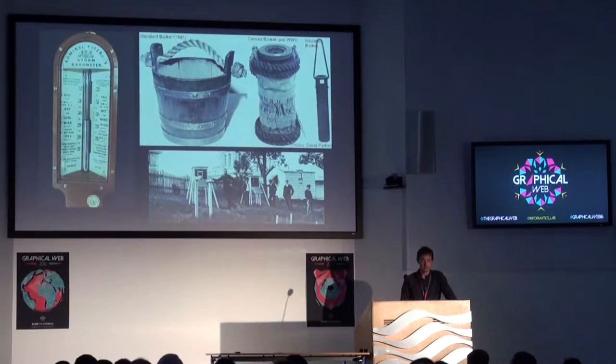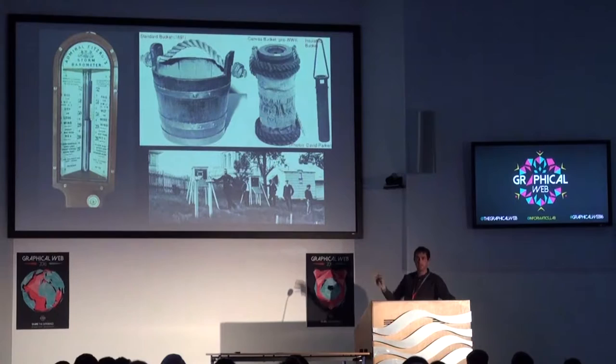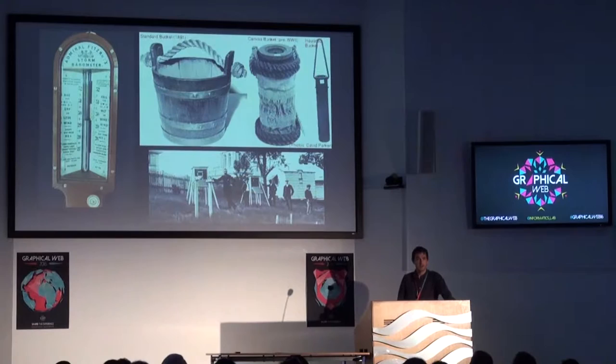Climate and weather is very much an observational science. Once the time is gone, you can't travel back in a time machine to retake observations — you have to make do with what you've got.